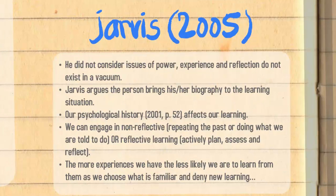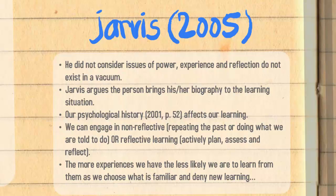Moving on to Jarvis, who was a critic of Kolb because he thought that issues of power, experience and reflection don't exist in a vacuum. Jarvis argues that the person brings his or her biography to the learning situation. You've each shared a different background — a different cultural background, learning background, motivations and reasons for taking the course. Our psychological history affects our learning. We can engage in non-reflective or reflective learning, meaning we either repeat the past and do what we're told, or we actively plan, assess and reflect. The more experiences we have, the less likely we are to learn from them as we choose what is familiar and deny new learning, because adults get comfortable in what they know.